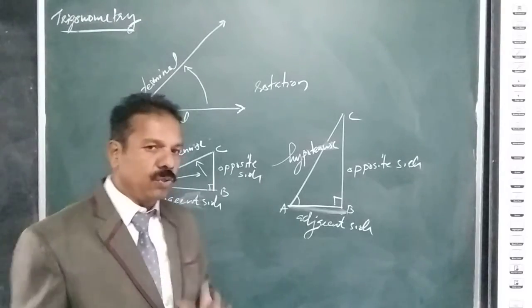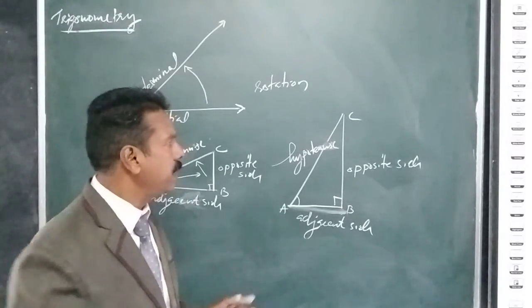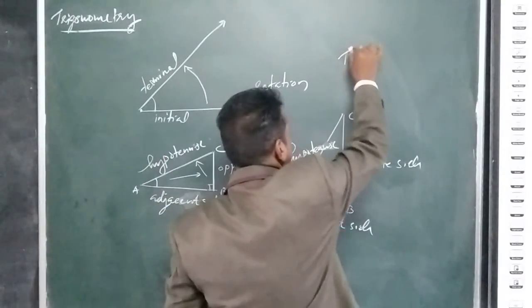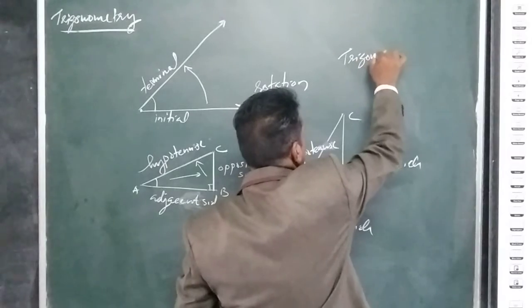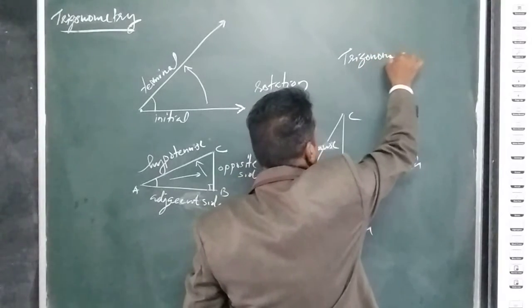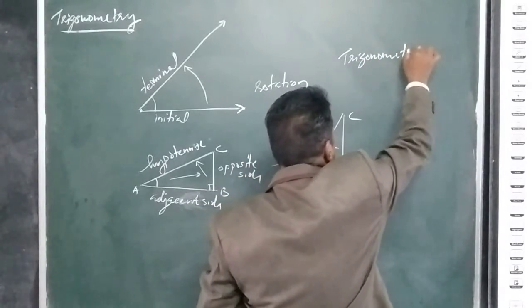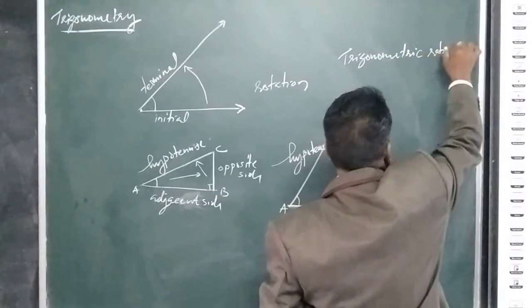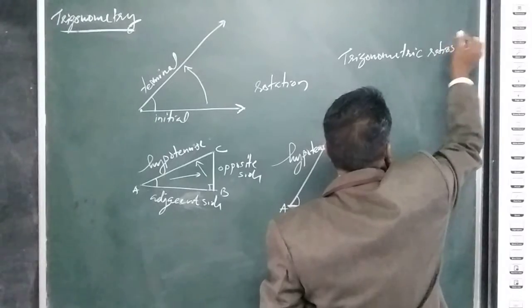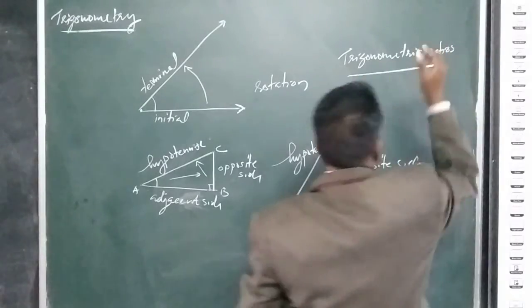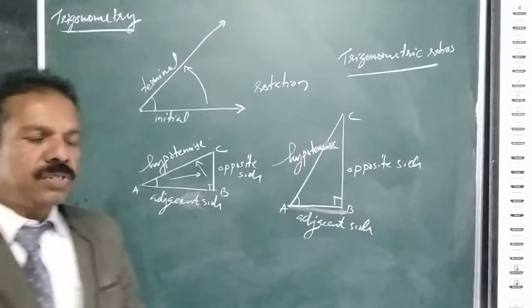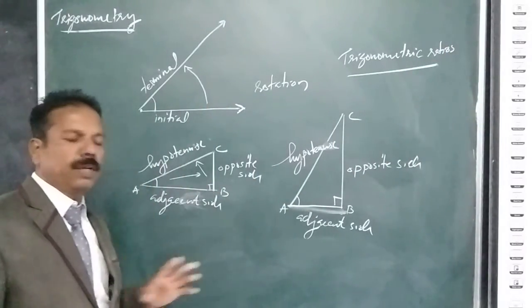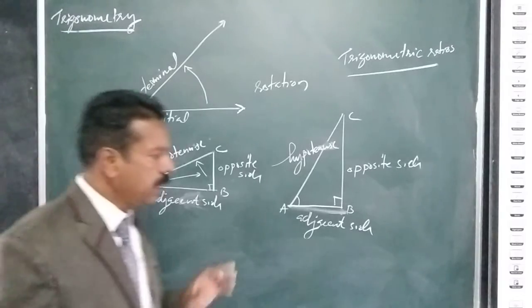Now we can take ratios — trigonometric ratios. A ratio is a comparison of two quantities by division.